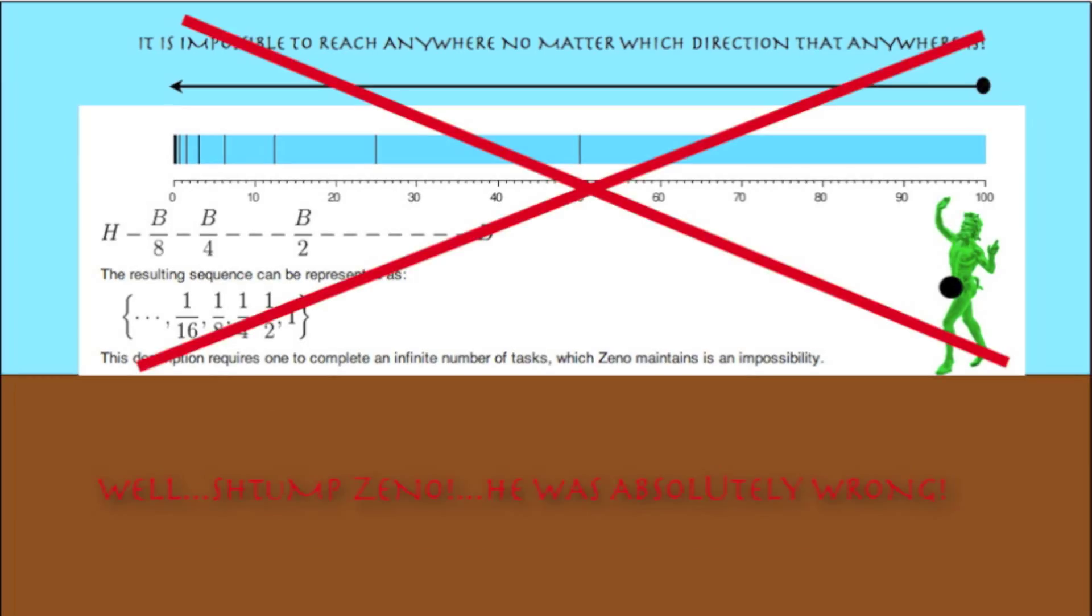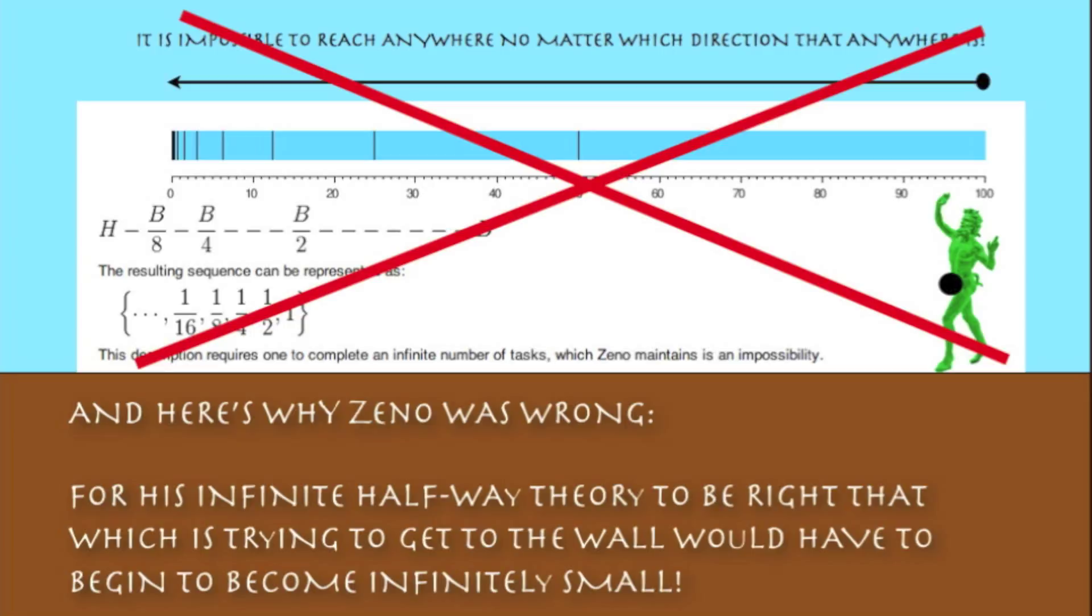Well, first stump Zeno, he was absolutely wrong. And here's why Zeno was wrong. In order for his infinite halfway theory to be right, that which is trying to get to the wall would have to begin to become infinitely small.